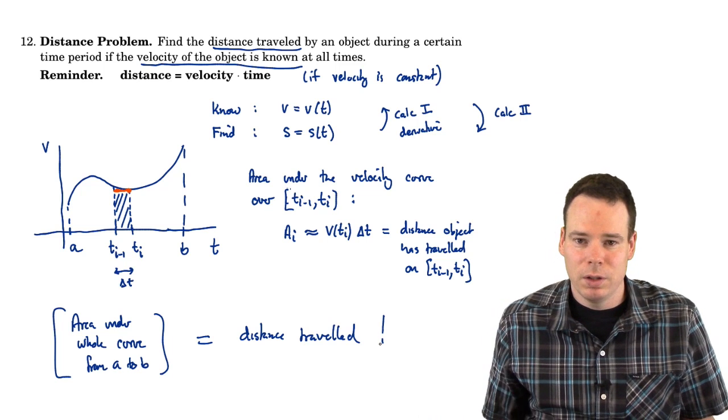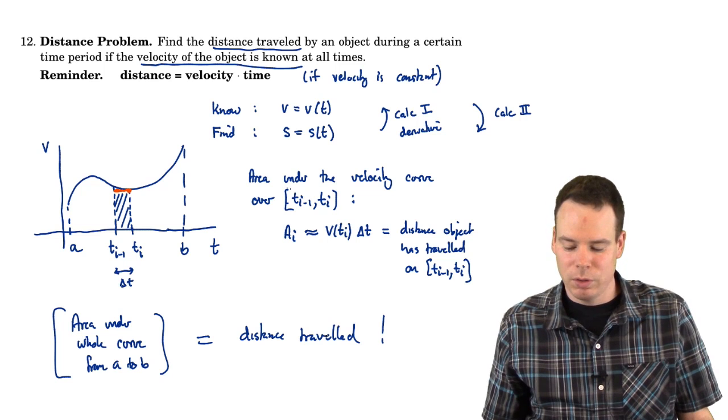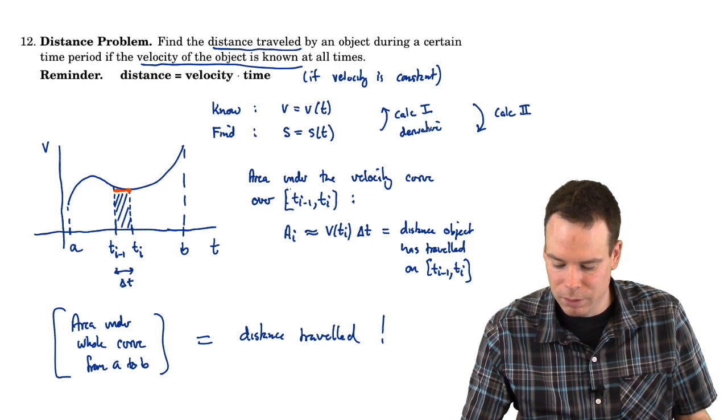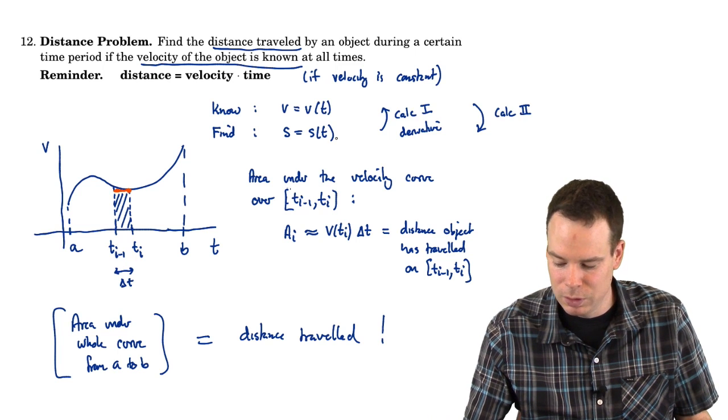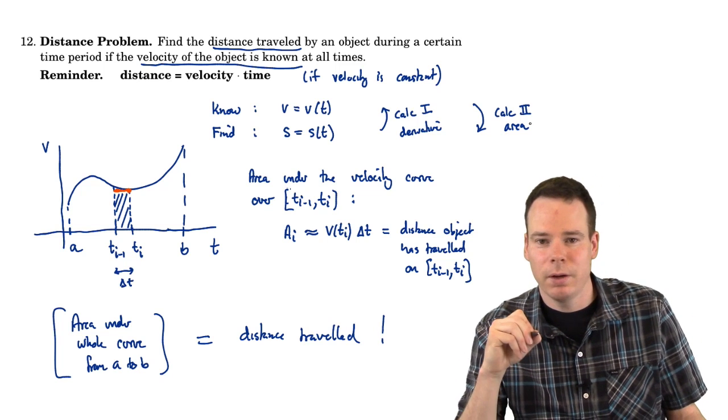So we know the velocity curve. Working out the area under the curve, turns out to be the distance that the particle has traveled, the object has traveled. So going from position to velocity in calculus 1 was the derivative. Going from velocity to position in calculus 2, this is the area problem.